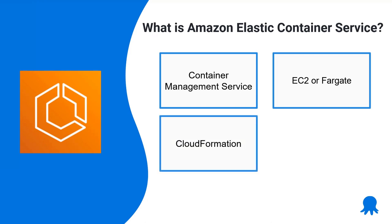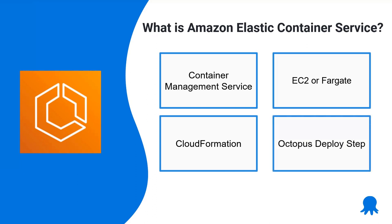We'll also be using CloudFormation, which is AWS's answer to infrastructure as code. We create templates that spin up all of the infrastructure, and we can check those into source control and keep that versioning history. We can also create CloudFormation templates and use them in steps in Octopus Deploy runbooks to stand up our infrastructure. ECS itself has a first-party step in Octopus Deploy, so instead of doing all of this manually, we've got an opinionated step that gives us everything we need to deploy our containers to ECS.